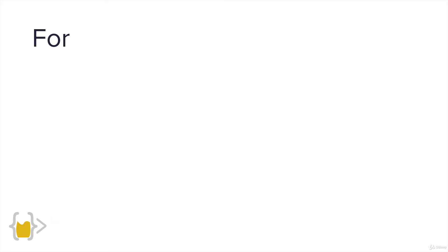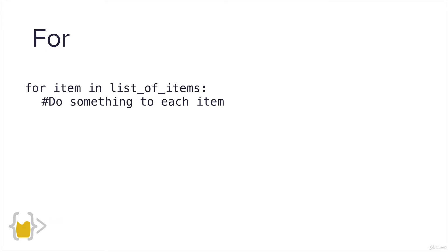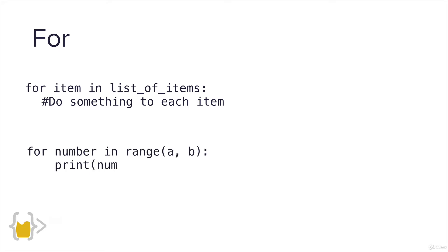Let's compare this against the for loop that we've seen before. We've seen two flavors of the for loop: one where we're looping through a list of items to do something with each item, and the other using a range function where we create a range between A and B and use every number in that range to, for example, print it out.